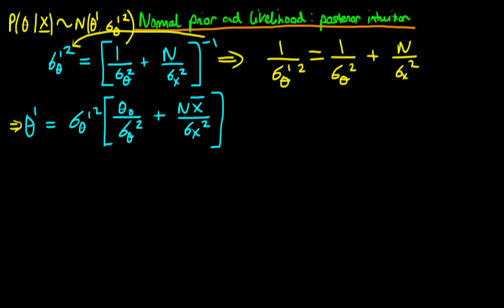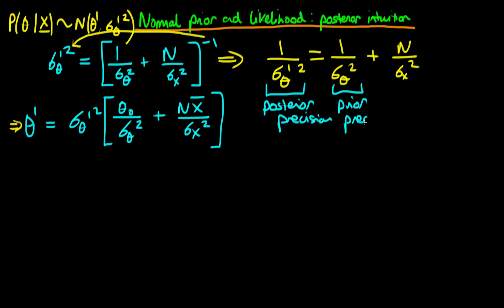So what's the intuition behind this result? If you talk about one over a variance, you're talking about something known as precision. You want precision to be as high as possible because you want the variance to be as low as possible. What we have here is that the posterior precision is a mix of two things: it equals the sum of the prior precision — how sure we were about our prior estimates — and what we call the data precision, which comes from having an actual sample of observations.